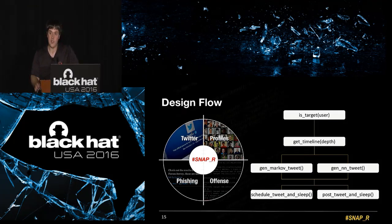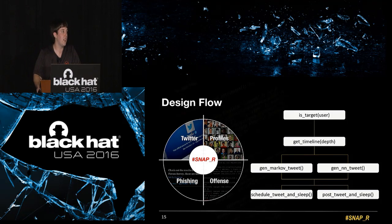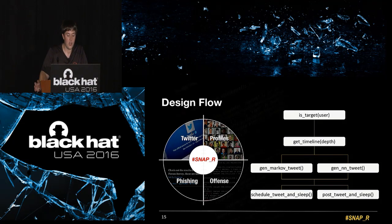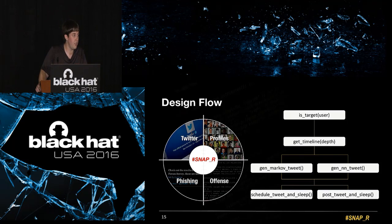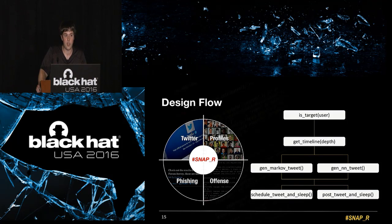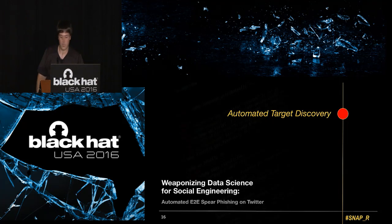At a very high level, how the tool works: you give it a list of Twitter users and a payload. For each user, it calls a machine learning model to find out if they're a target. Assuming they are, it goes and collects their timeline to a specified depth and generates a tweet using either a Markov model or a neural network. After generating the tweet, you can choose to schedule it for when the user is most active, or post it immediately — useful for a live demo on stage.